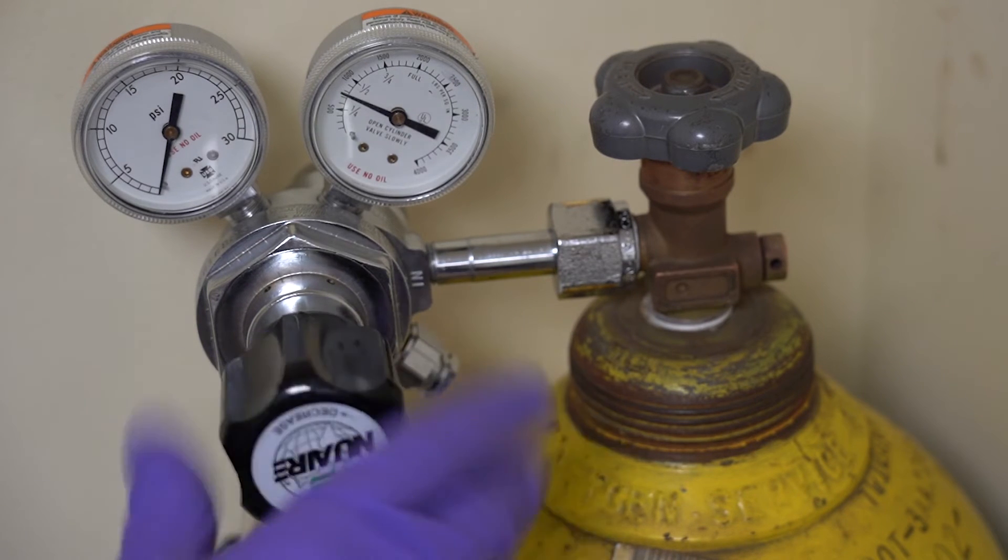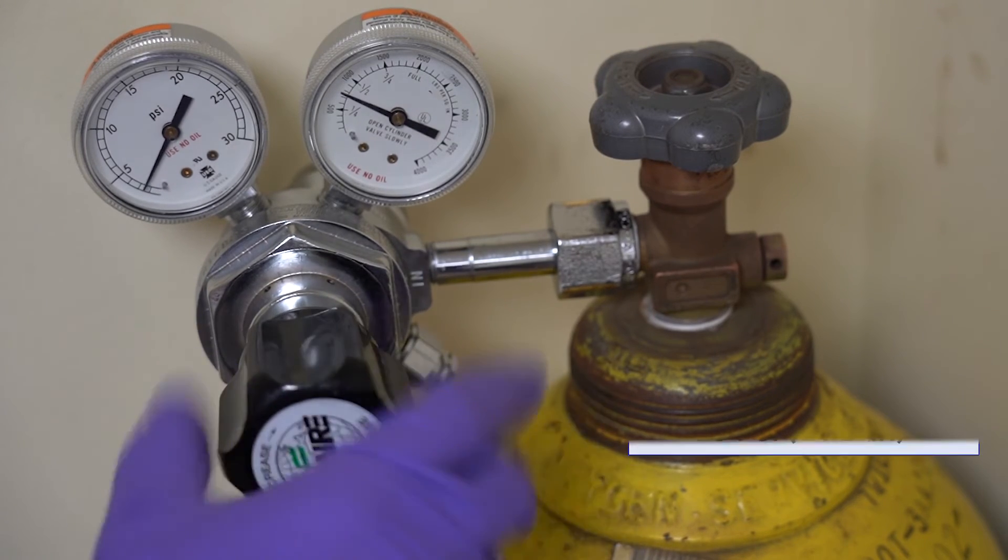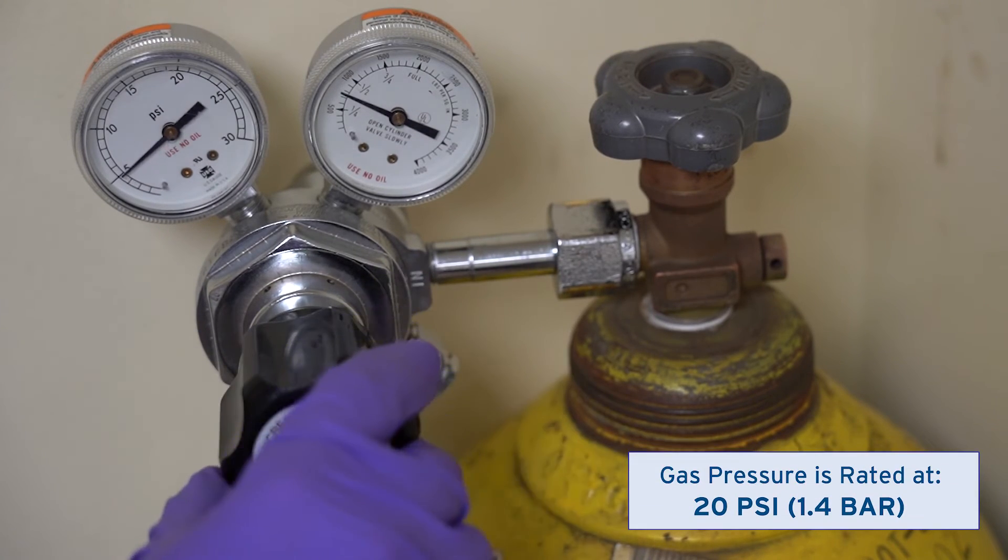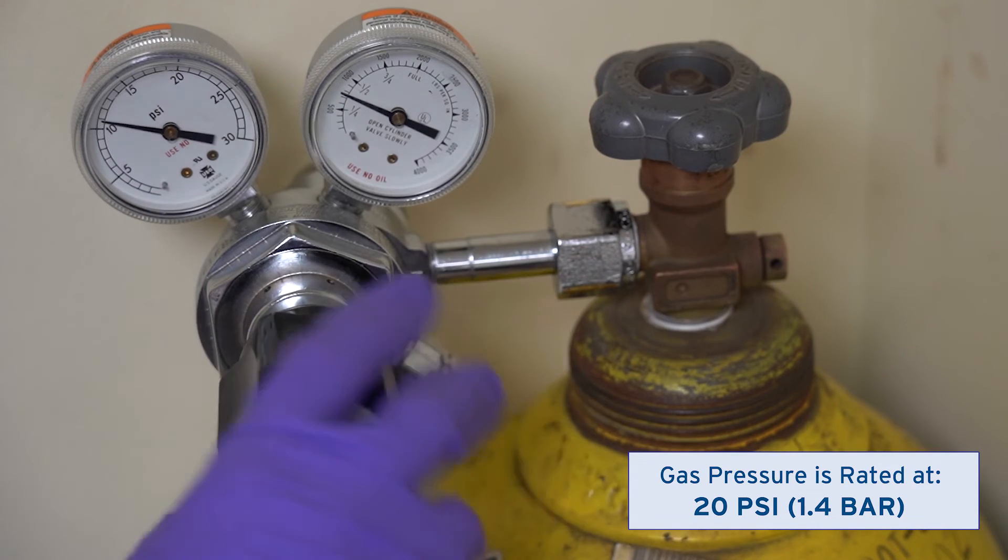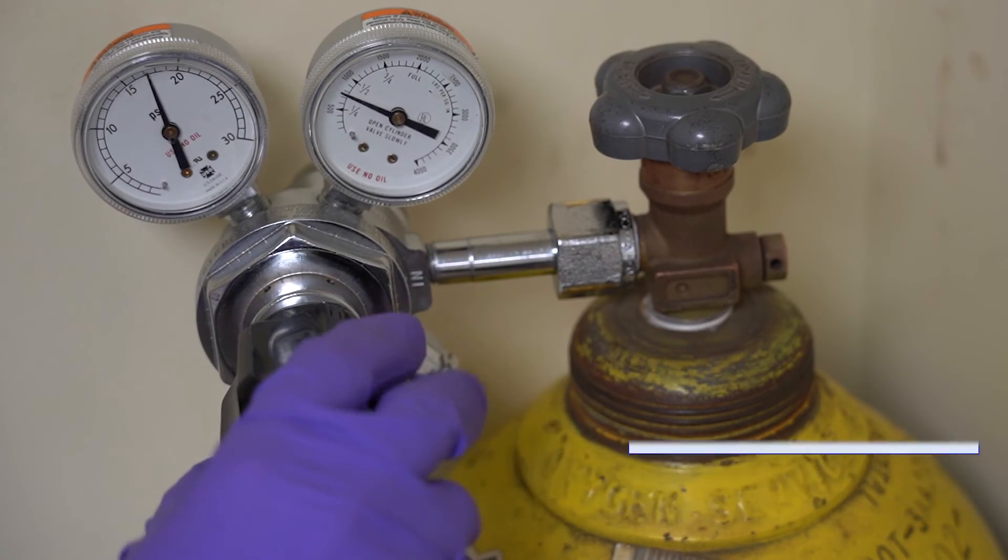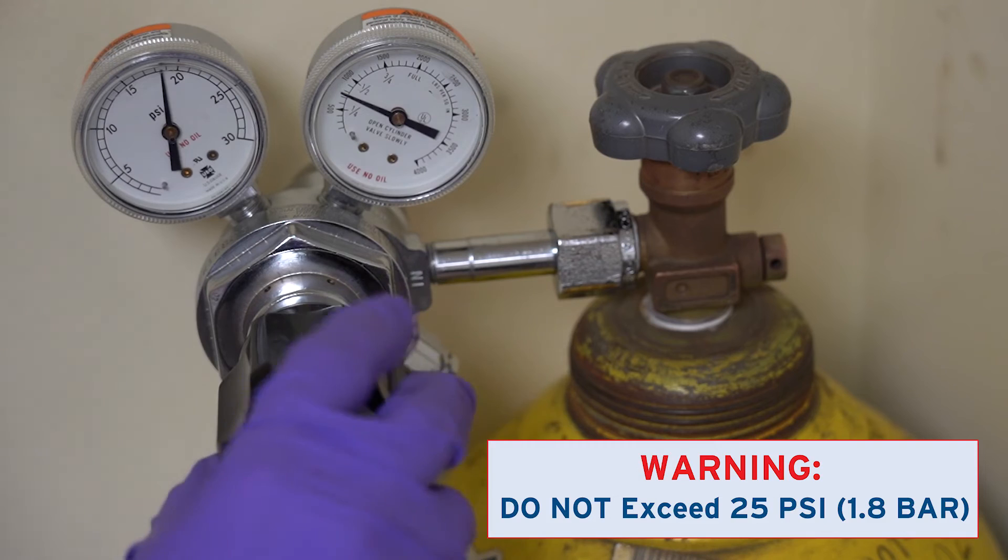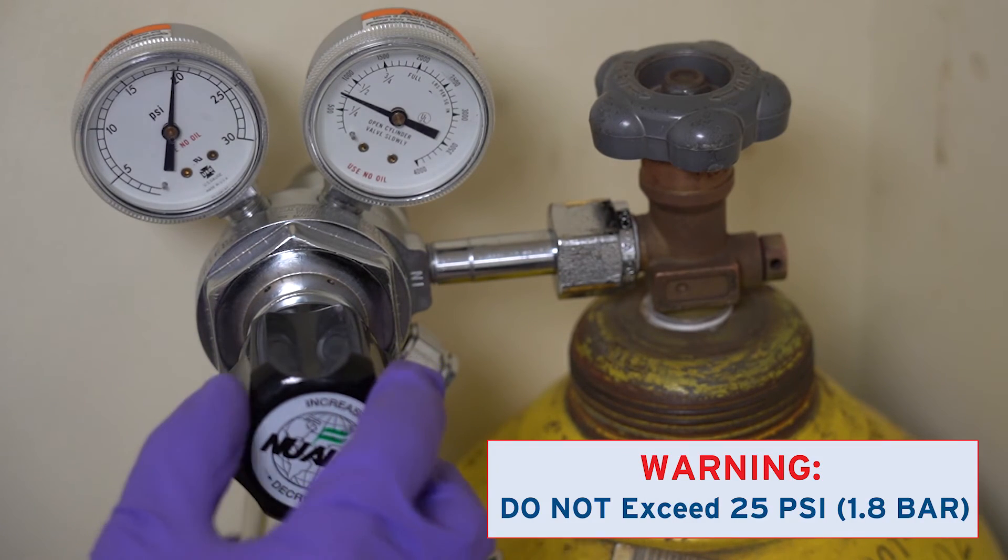Open the CO2 regulator by turning the knob clockwise. Watch the gauge on the low-pressure side of the regulator increase as you turn. Continue until it reads 20 psi or 1.4 bar and then stop. Make sure you do not exceed 25 psi or 1.8 bar.